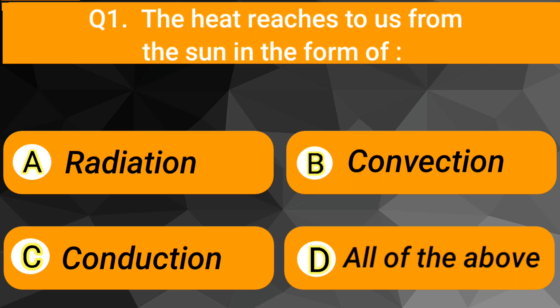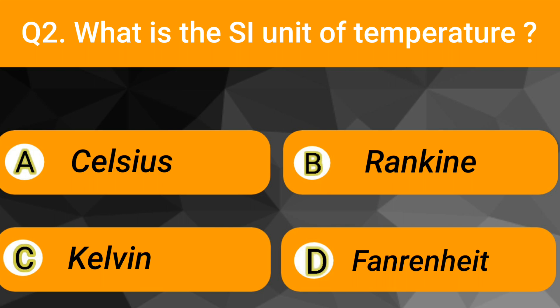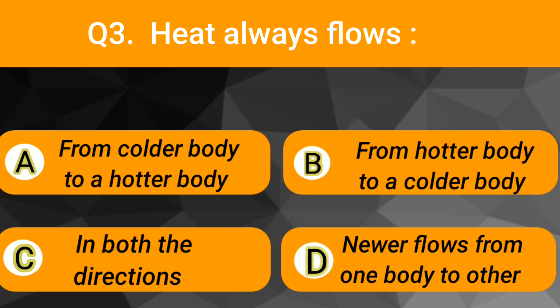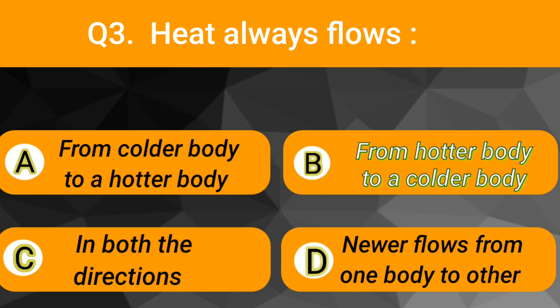The heat reaches to us from the Sun in the form of radiation. What is the SI unit of temperature? Kelvin. Heat always flows from hotter body to a colder body.